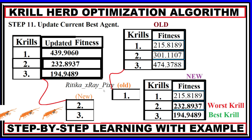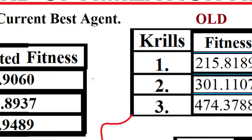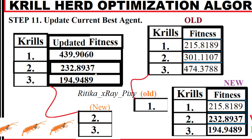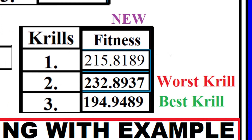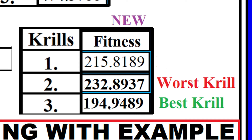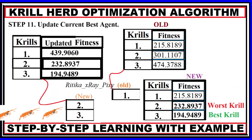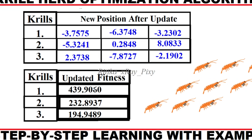Now we update the current master agent by comparing older and new fitness values. For the first krill, the older value is better, so we keep it. For the second and third krills, the updated values are better. We arrange the krills in ascending order again: the best is the third krill and the worst is the second krill. These updated positions and fitness values are used in the next iteration.